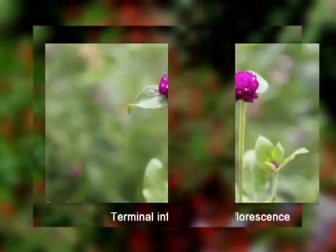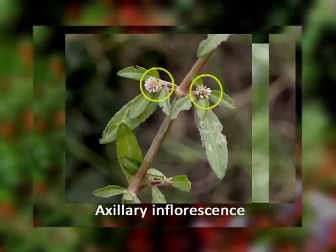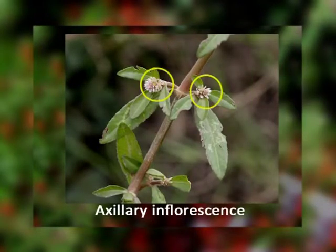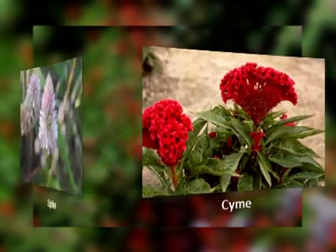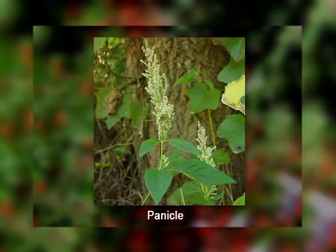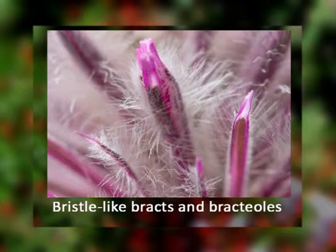Now let us discuss its floral morphology, starting with inflorescence. The inflorescence in Amaranthaceae can be either terminal, that means at the top of the plant body, or axillary, that means in the axils of leaves. The inflorescence is usually a cyme, spike or panicle, but it is characteristically associated with conspicuous, prominent, bristle-like persistent bracts and bracteoles. In some cases this inflorescence can be completely reduced into a solitary flower.